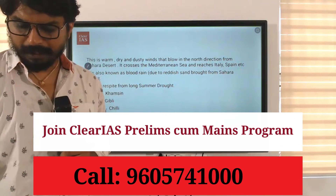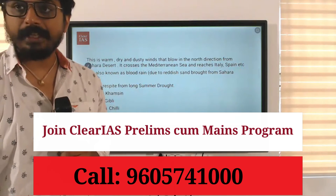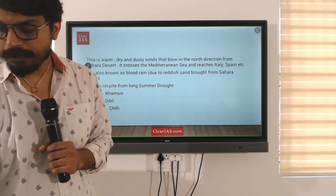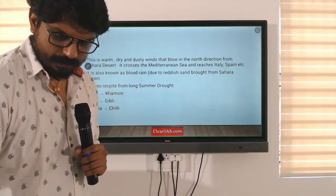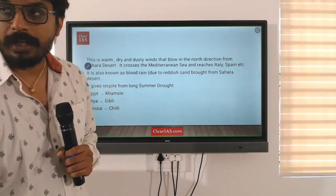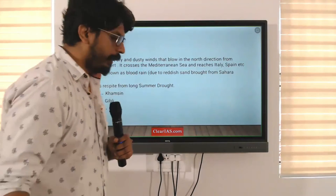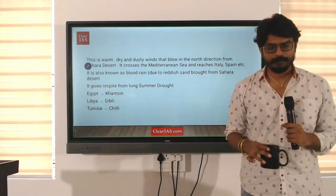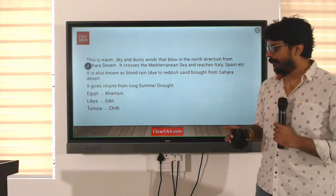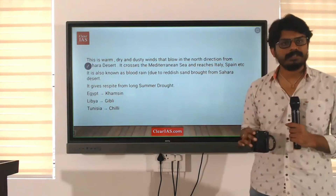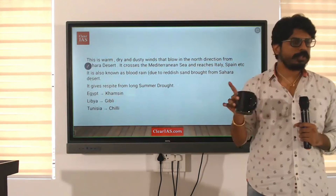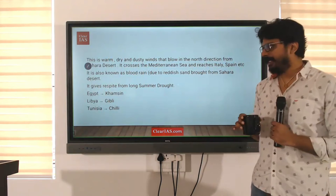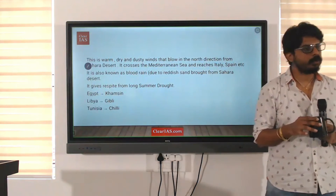It is called by different names: in Egypt, this wind is called Khamsin; in Libya, it is called Ghibli; and in Tunisia, it is called Chili. You can note these in your notes. Altogether, these winds are called Sirocco.